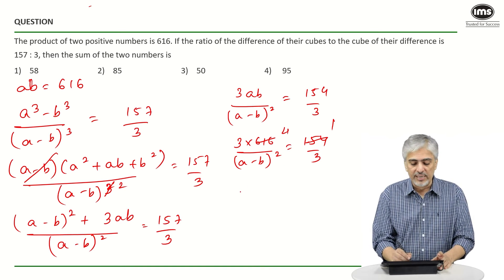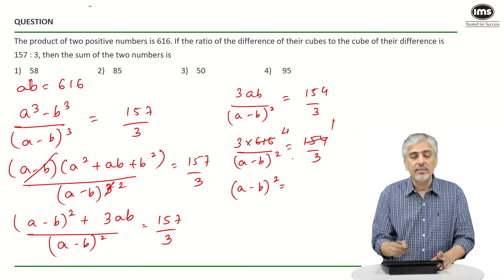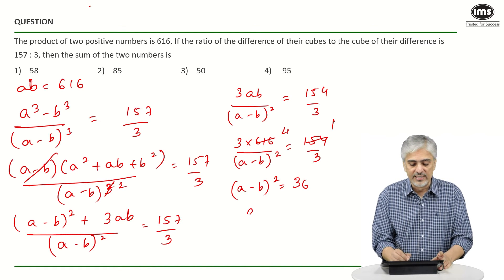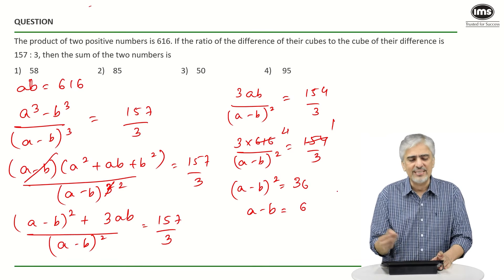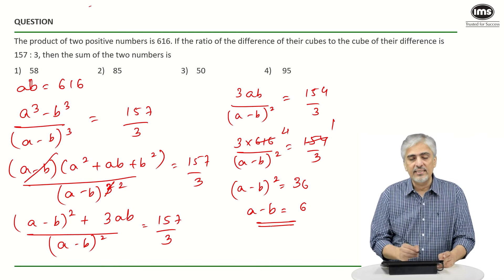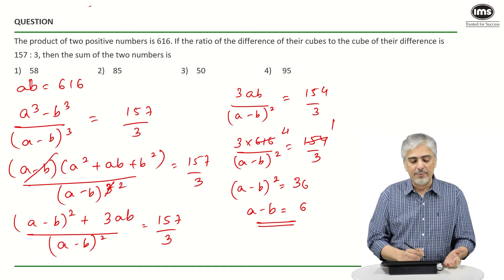If I solve this out I'll get (a minus b)² is how much? That's 12, 3s are 36. So a minus b is 6 plus or minus 6. But let's assume a is greater and b is smaller. A minus b is 6. And I want to find a plus b.